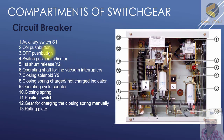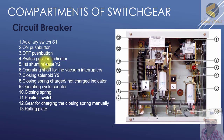Number two is the ON push button — if you press this one, the breaker will be on. Number three is the OFF push button — if you press this red color button, the breaker will become off. Number four is the switch position indicator, which shows the position of the breaker, either open or closed.